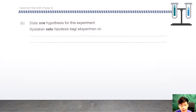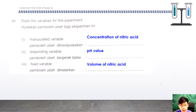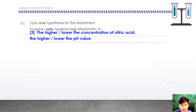Step 1: Hypothesis for the experiment. For the hypothesis, remember we have to include the manipulated variable and the responding variable, and also include the direction. Suggested answer for score 3: 'The higher or lower the concentration of acid, the higher or lower the pH value.' Concentration of acid is the manipulated variable, pH value is the responding variable, and higher or lower indicates the direction.